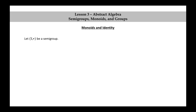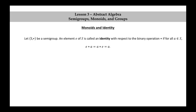Monoids and identity. Let S★ be a semigroup. An element E of S is called an identity with respect to the binary operation ★ if for all A in S, E★A and A★E are both equal to A. A monoid is a semigroup with an identity.